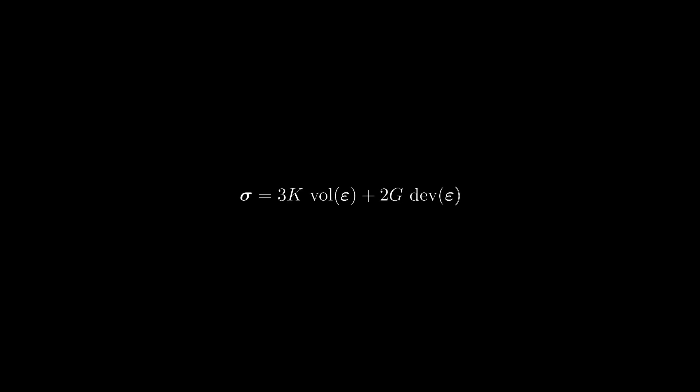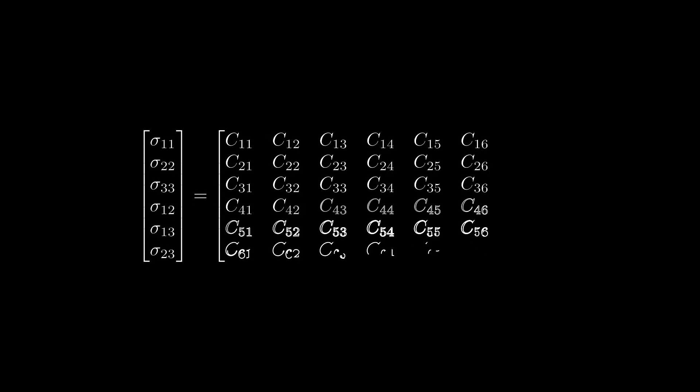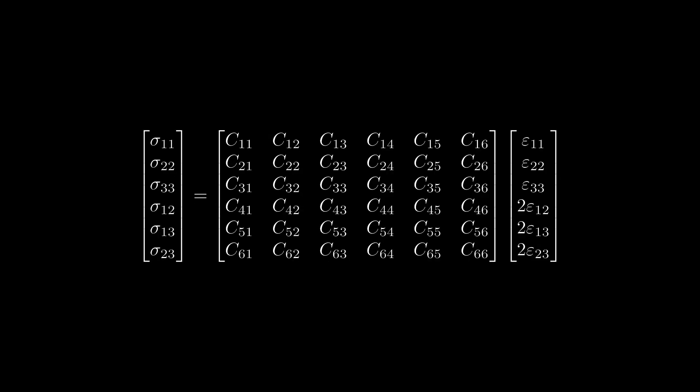The way we derived the linear elastic model is a bit unusual, but it is insightful: we started with a reasonable but naive idea, realized it failed to model the Poisson effect, and adapted the model accordingly. But perhaps in your solid mechanics class you have seen a different derivation — one that involves a so-called stiffness matrix. Let's see if we can bring the model into a more familiar form.